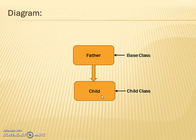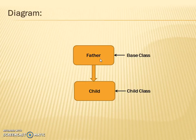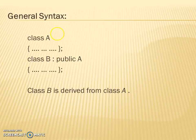In this example you can see there are two classes: first is Father and then the Child. The base class is Father and the Child class is the derived class. So Child is accessing all the features of the base class Father.